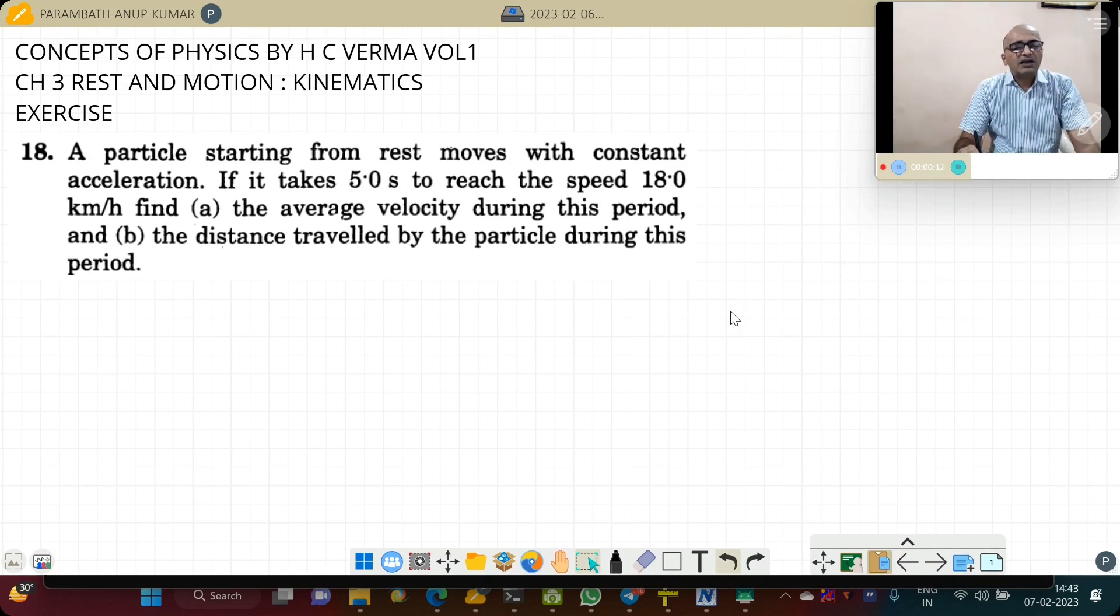A particle starting from rest moves with constant acceleration. If it takes 5 seconds to reach the speed of 18 km per hour, find (a) the average velocity during this period, (b) the distance traveled by the particle during this period.